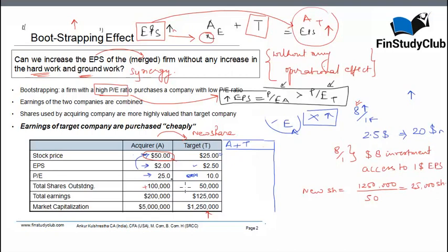In total, the total number of shares have now become 125,000. As I said, there is no operational efficiency, no synergy at all. So my total earnings is just a mathematical sum of the pre-merger earnings. There is absolutely no synergies overall by the merged entity.